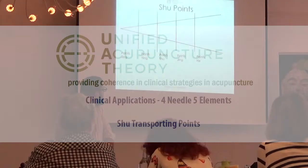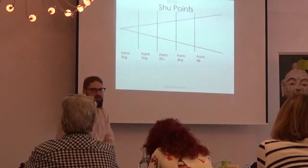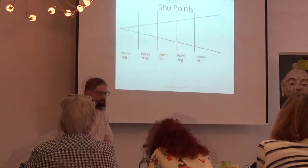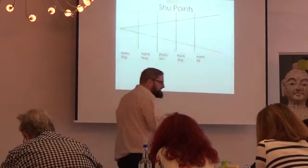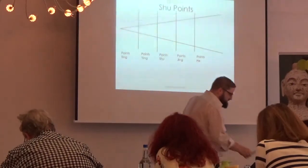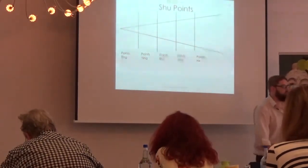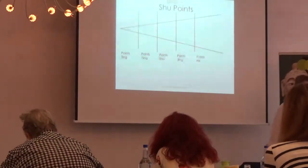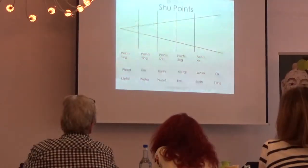The next thing we're going to look at is what we call our Shu transporting points. We do know, and it's written in the Nei Jing, that we have a certain order to the points. The bottom is going to be the Yang point, the top is going to be Yin.